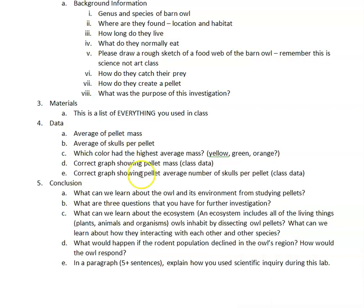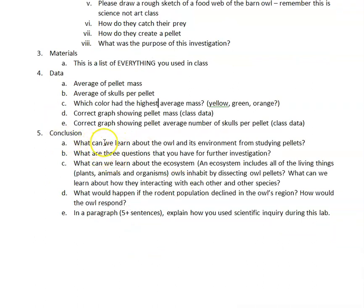Finally, the conclusion is our last section. What can we learn about the owl and its environment from studying pellets? What are three questions you have for further investigation? Where can we go from here — how could you take this and change it in the future? Also, what can we learn about the ecosystem? The ecosystem includes all living things — plants, animals, organisms — and how they interact with their environment. By dissecting owl pellets, what can we learn about how owls interact with other species?